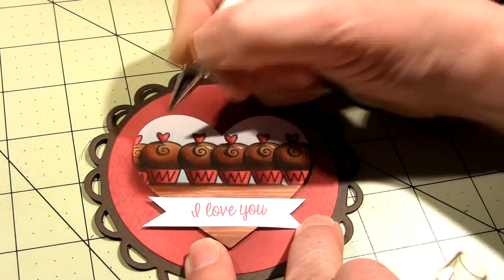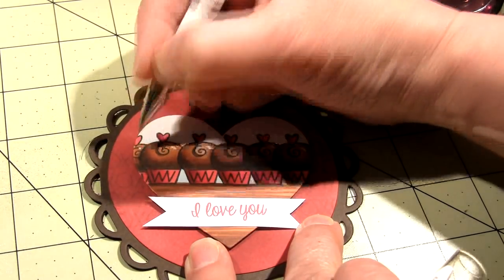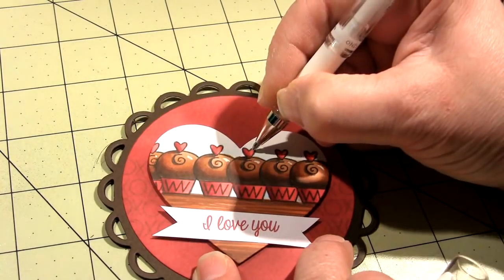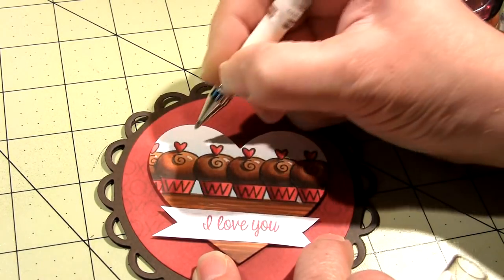I'm using a Signo white pen to add highlights. I'm just going to add a little tiny line to the top of each of the truffles, to each of the hearts, and then a little detail onto the cupcake tins themselves.